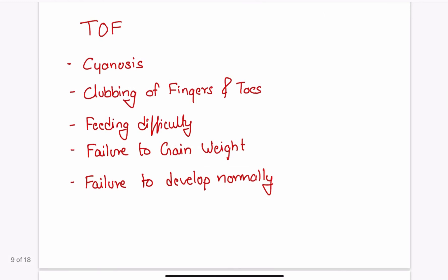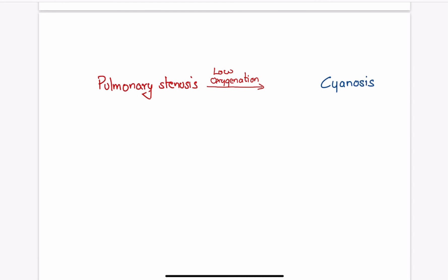Along with cyanosis there can also be clubbing of fingers and toes, feeding difficulty, failure to gain weight and develop normally. If the stenosis is mild more blood will flow towards the lungs and the cyanosis may be absent. These are sometimes described as pink tets or acyanotic Tetralogy of Fallot.